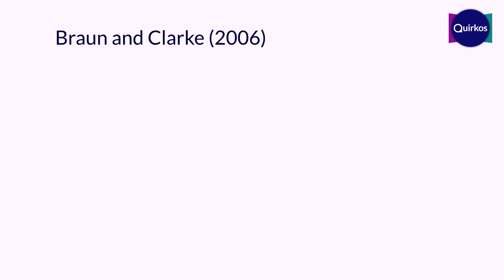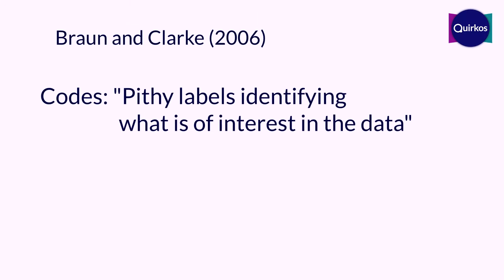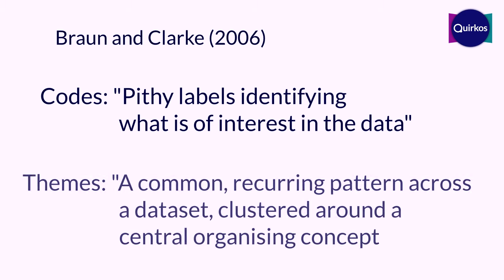Braun and Clark describe codes as being a 'pithy label' identifying what's of interest in the data, while themes are an idea or concept making a common recurring pattern across a data set, clustered around a central organizing concept. So in our example, 'low fat yogurt' might be a code, and 'healthy eating' would be something more like a theme.